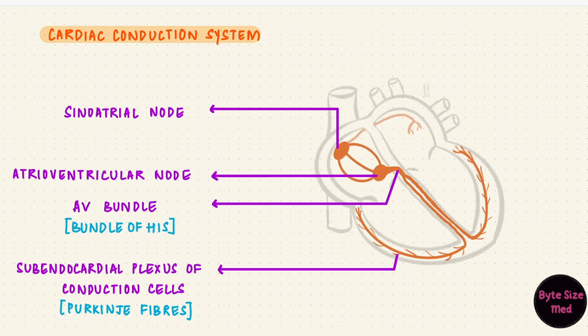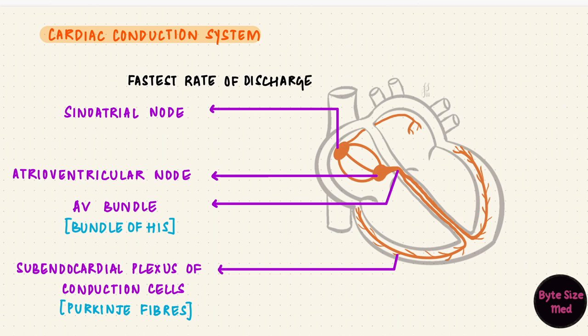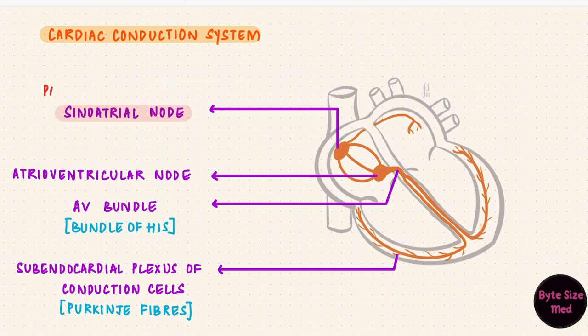These structures run through the heart between the atria and the ventricles. Though all are capable of self-excitation, the structure that discharges the fastest sets the rhythm — the rest get suppressed. Usually the structure that takes on that responsibility is the sinoatrial node, hence it acquires the title of pacemaker of the heart.